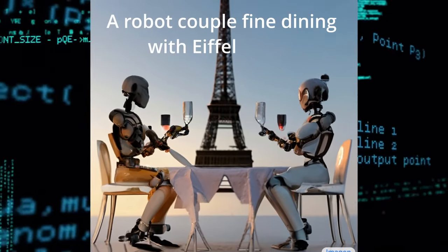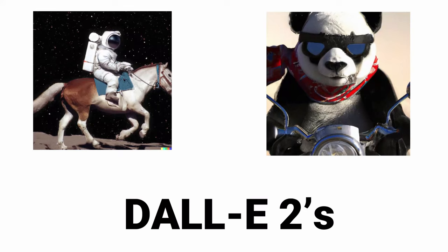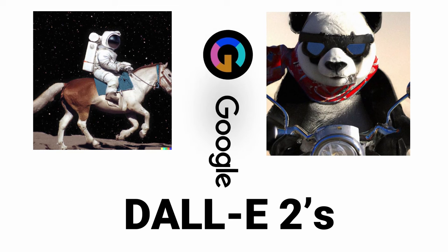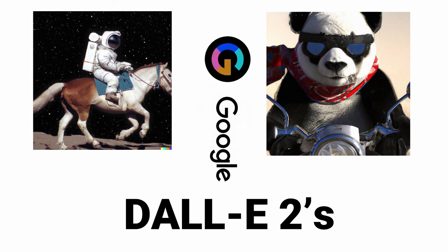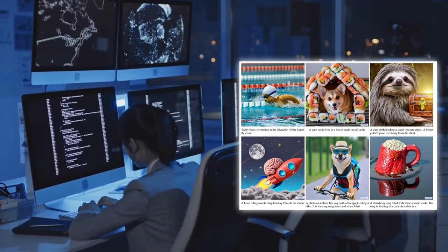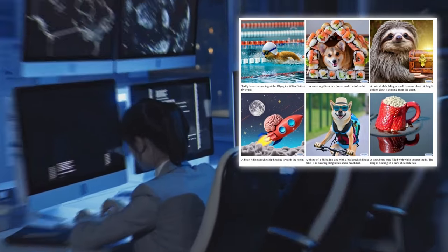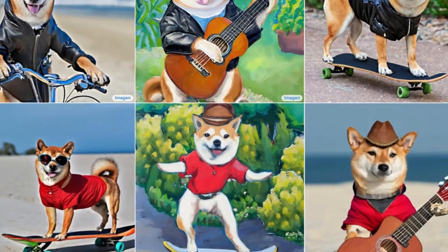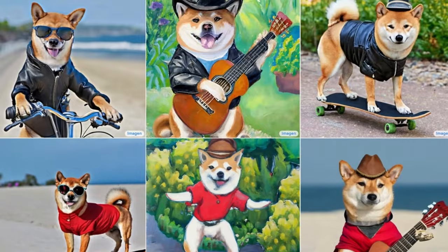Google's new Imagine photorealistic text-to-image diffusion model outperforms OpenAI's DALL-E 2 and demonstrates deep language understanding. Imagine builds on the power of large transformer language models in understanding text and hinges on the strength of diffusion models in high-fidelity image generation.